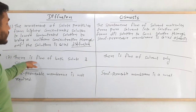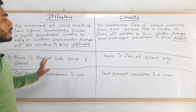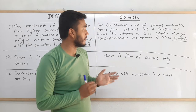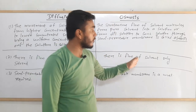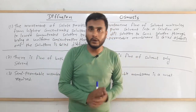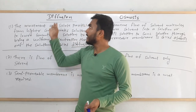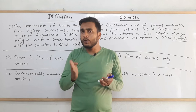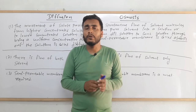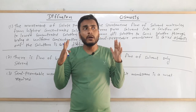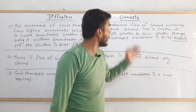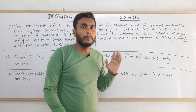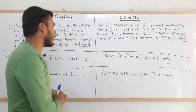The second difference is very important: in diffusion there is flow of both solute and solvent — it is a bilateral process where both solute and solvent flow from one side to another. But in case of osmosis, only the solvent flows; the solute does not flow at all.